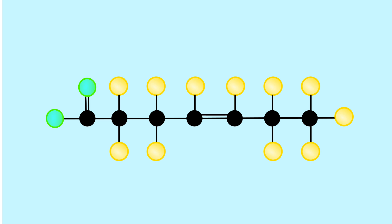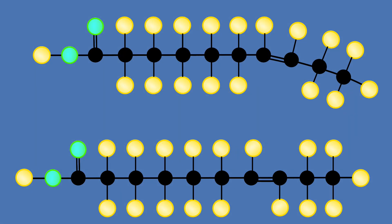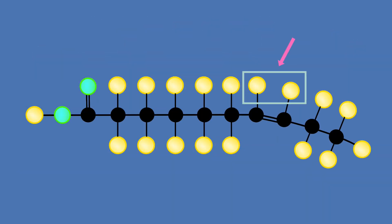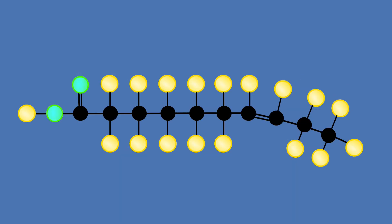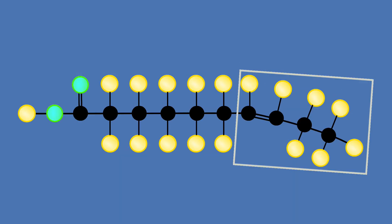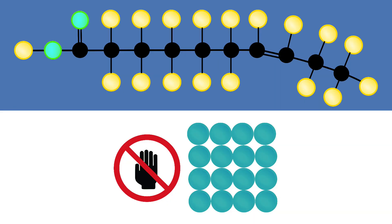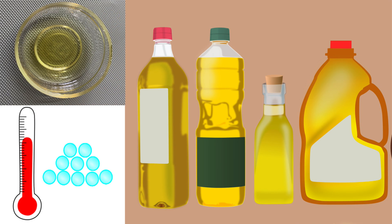Unsaturated fatty acids have one or more double bonds between the two carbon atoms. Each double bond may be in a cis or trans arrangement. In the cis arrangement, both hydrogens are on the same side of the chain. In the trans arrangement, the hydrogens are on opposite sides of the chain. A cis double bond causes a kink or bend in the fatty acid chain, which prevents the fatty acids from packing tightly. Hence, they are liquid at room temperature.